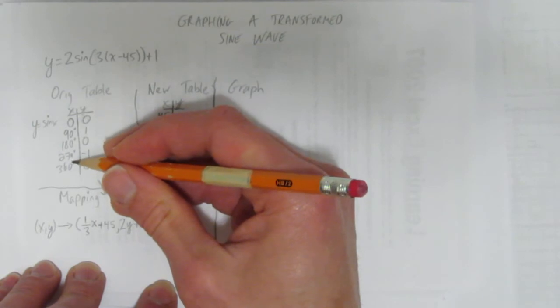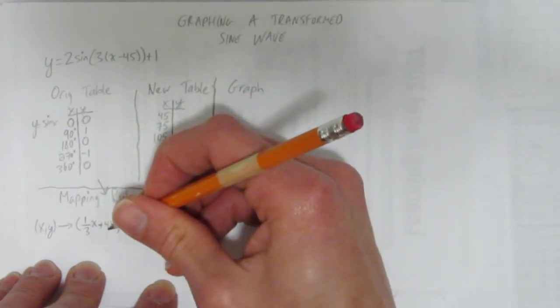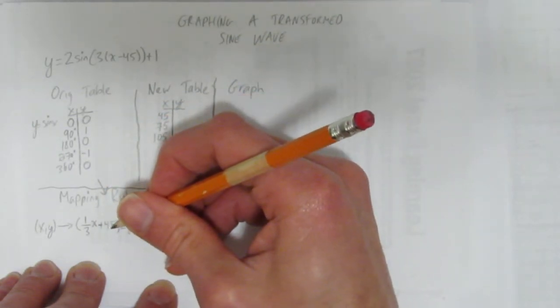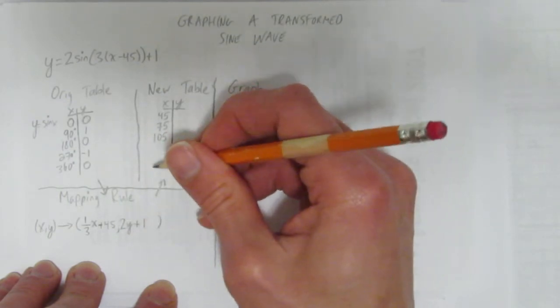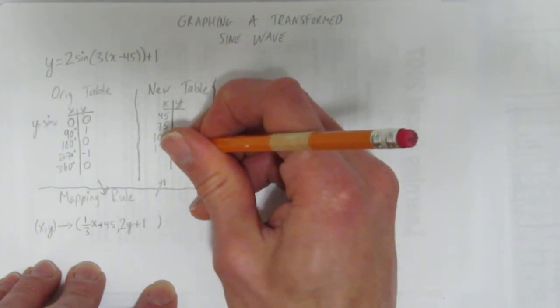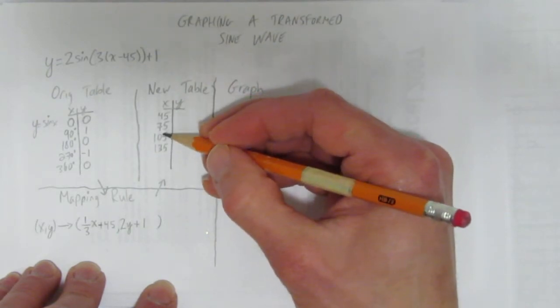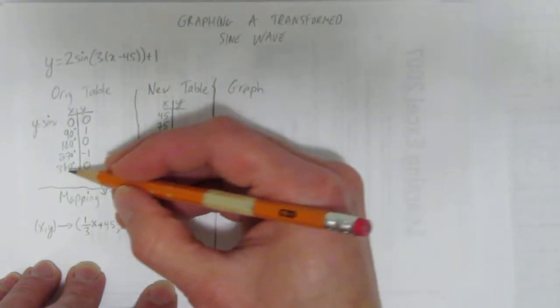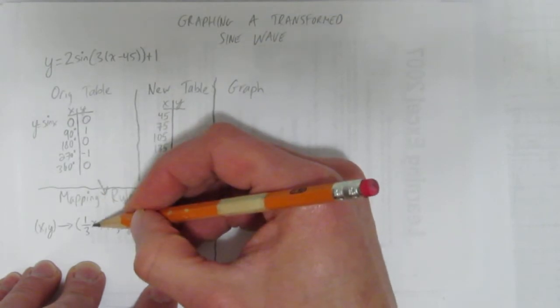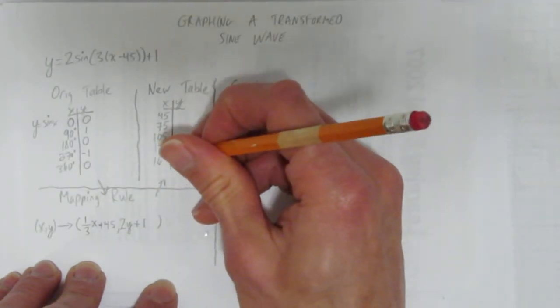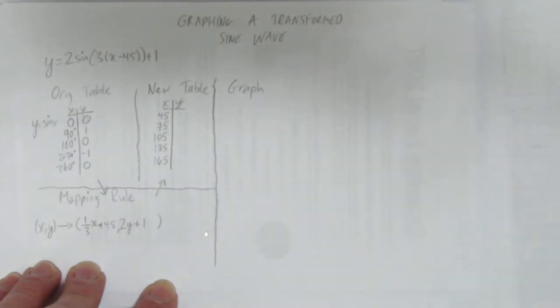270. 270 divided by 3, you get 90. What's 90 plus 45? If you're not sure, you can use your calculator, but you should also see the pattern. It's 135. I did it in my head, but then I checked. Look, plus 30, plus 30, plus 30. I bet the next one's 165. 360 divided by 3 is 120. Yep, 165. Those are the x's.